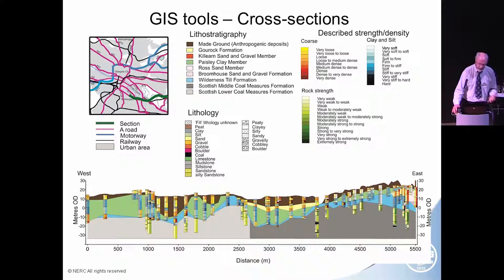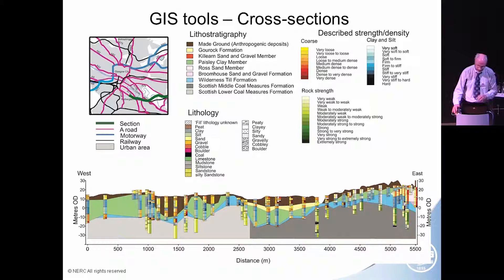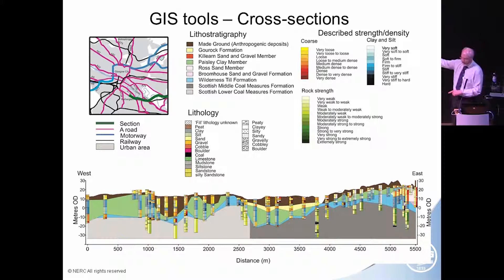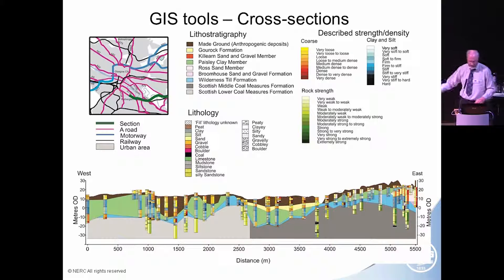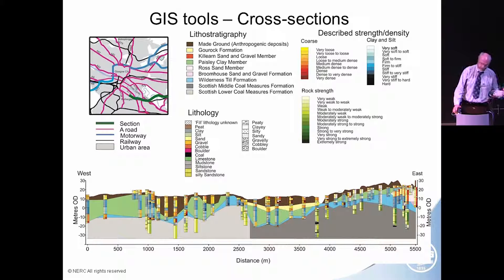We also have cross-sections. This is a rather complex cross-section in which we have a map showing the cross-section, lithostratigraphy in the background, lithology in the left-hand borehole, and then a characteristic — in this case describing strength or density — in the right-hand borehole. You can click on this and blow it up and have a look at it in detail within the GIS.